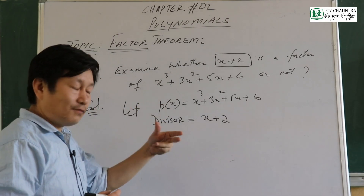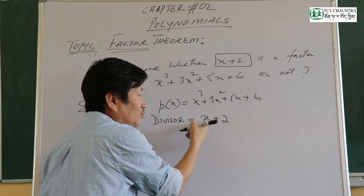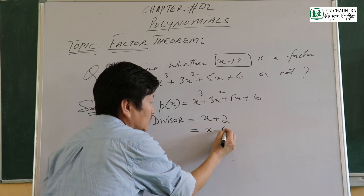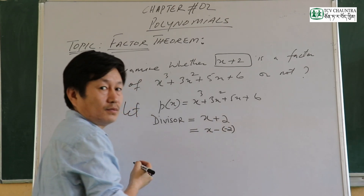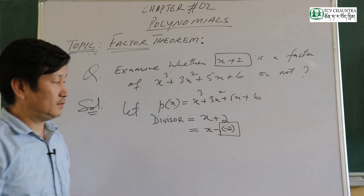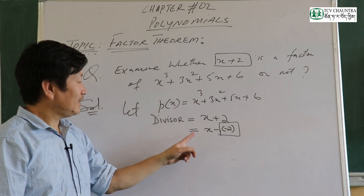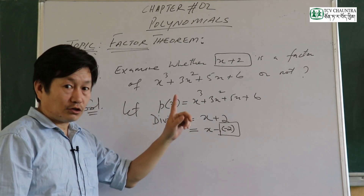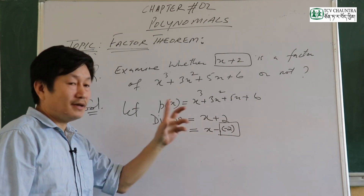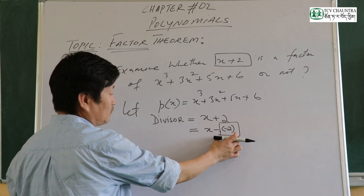Divisor x plus 2 acts like x minus a as a factor. To identify it: make x minus a equal to zero, so x equals negative 2. We check the factor: if we check p(negative 2) and it remains zero, then x plus 2 is a factor. So we have to check p(negative 2).